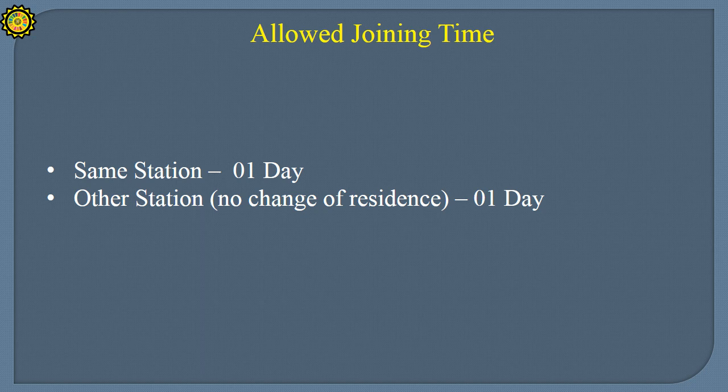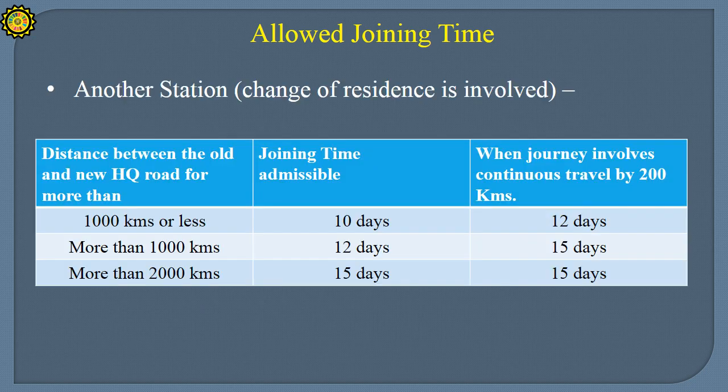Allowed Joining Time: When transfer is in the same station — one day. When the transfer is to another station but residence is not changed — one day. If transfer is to another station and residence change is involved: when the distance between old and new headquarters is 1000 km or less, joining time admissible is 10 days. When journey involves continual travel by road more than 200 km, joining time is 12 days.